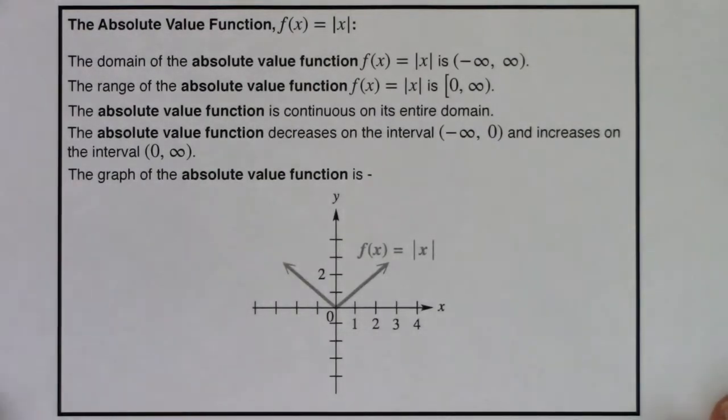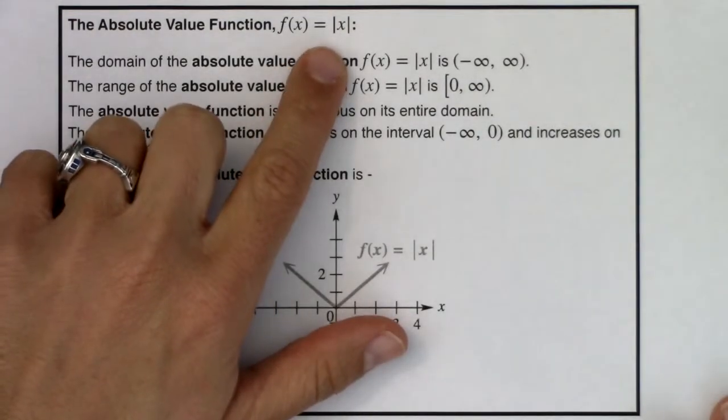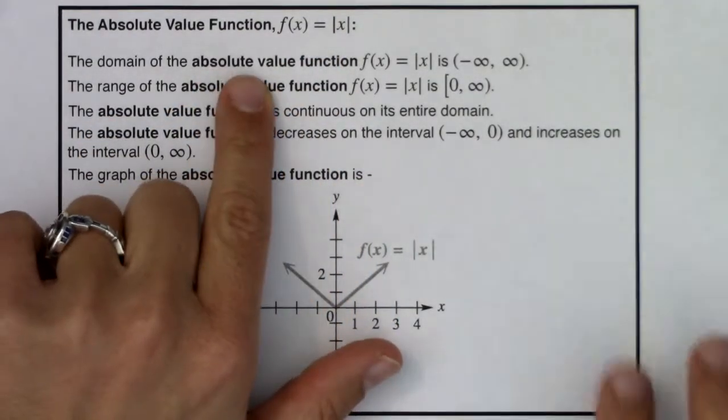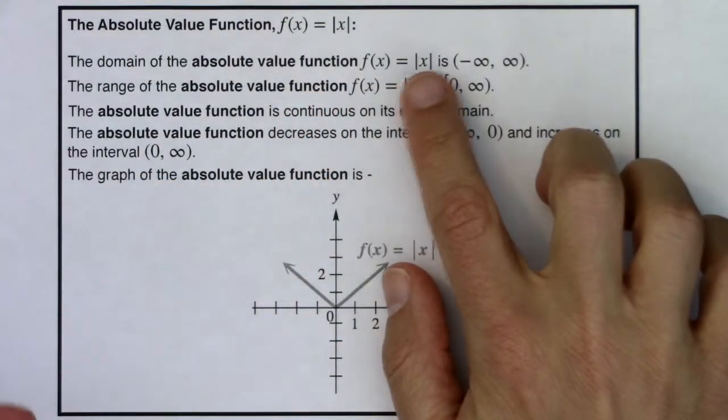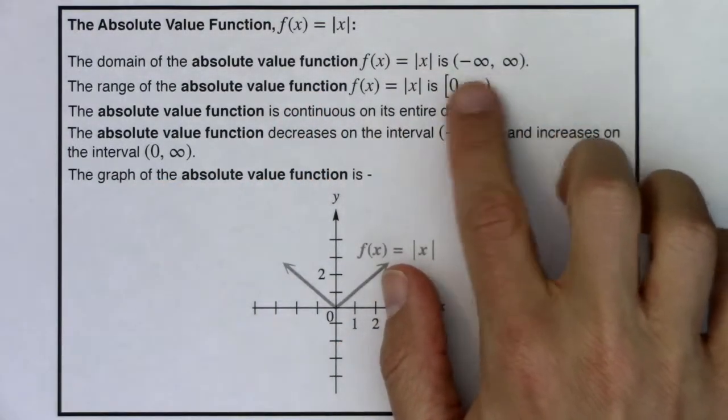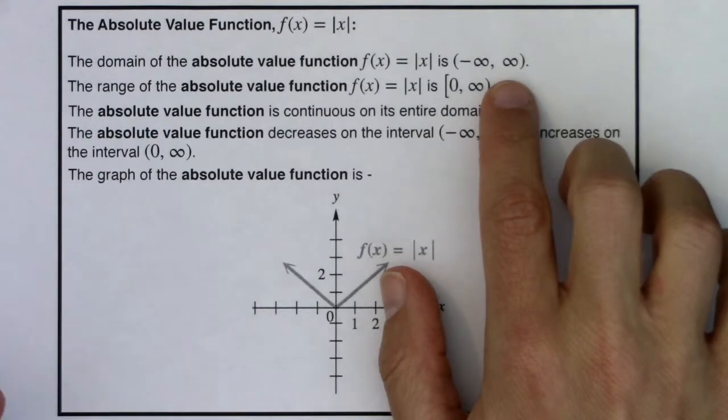So here's our absolute value function, right? So if you see absolute value of x, know that the domain is all real numbers. Take note, we don't have a fraction, we don't have a radical, we don't have a logarithm, so my domain stays all real, nothing I need to give the boot to.